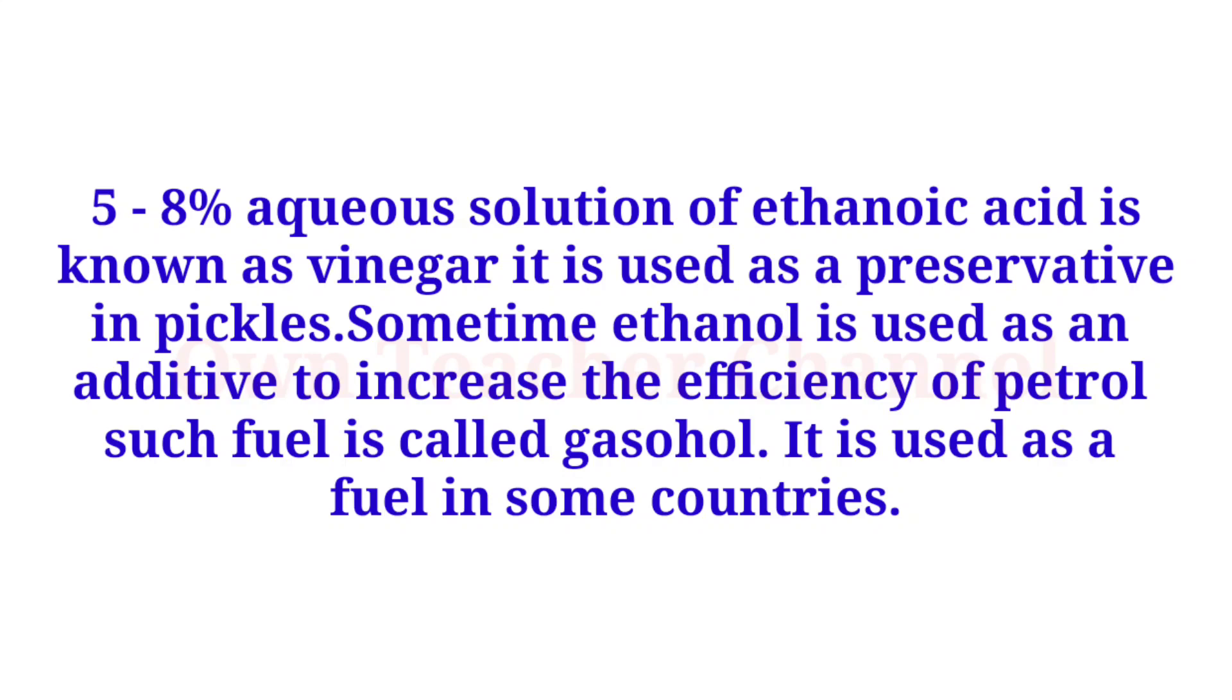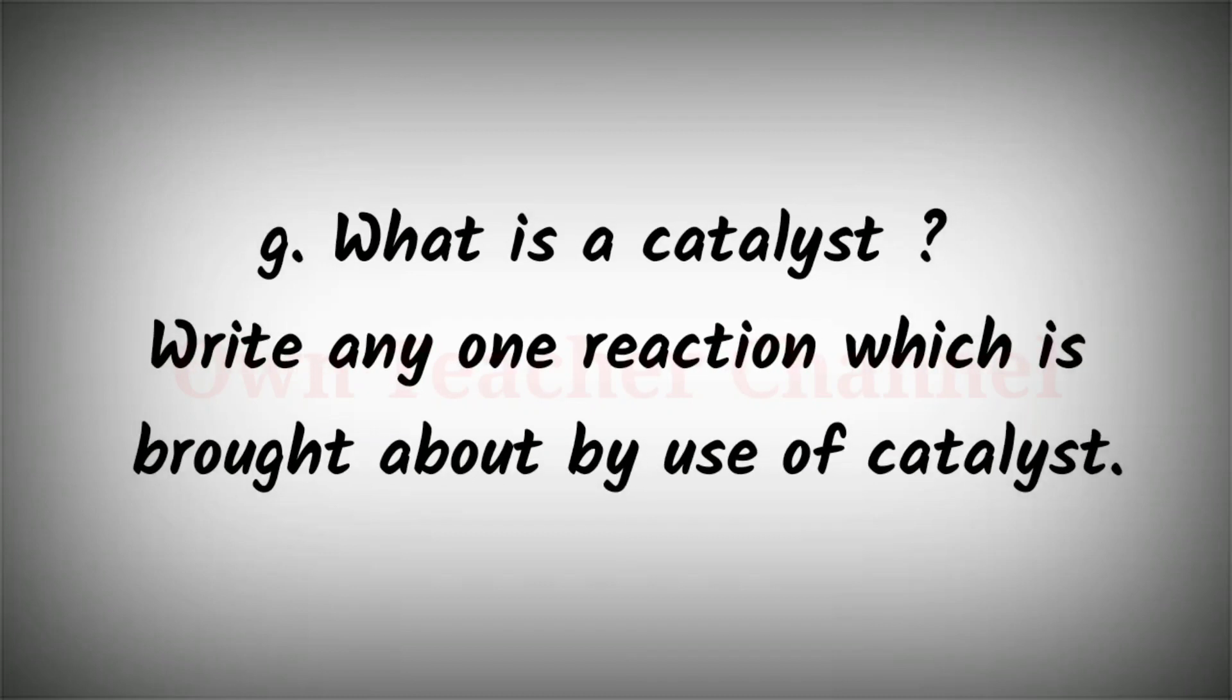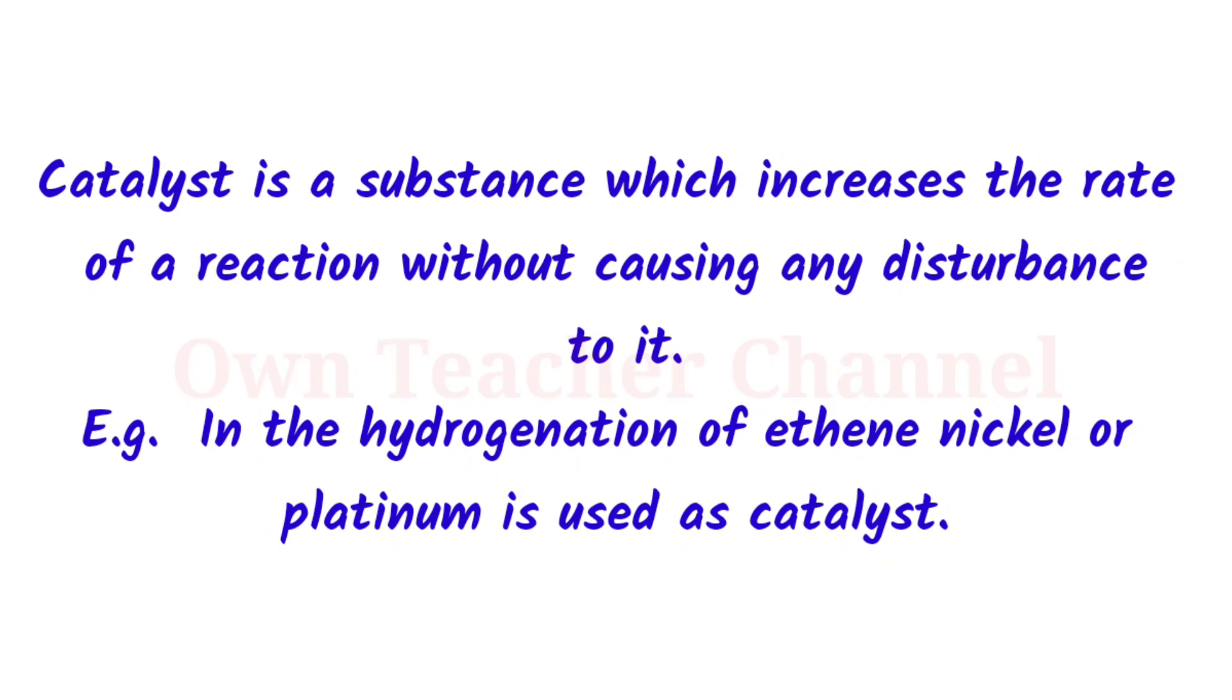What is a catalyst? Write any one reaction which is brought about by use of catalyst. Catalyst is a substance which increases the rate of a reaction without causing any disturbance to it. For example, in the hydrogenation of ethene, nickel or platinum is used as catalyst.